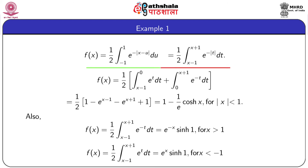Substituting x - u = t, this integral is written as ½·∫_{x-1}^{x+1} e^{-|t|} dt. For |x| < 1, we evaluate this integral by breaking it from x-1 to 0 (where t is negative, so e^{-|t|} = e^t) and from 0 to x+1 (where t is positive, so e^{-|t|} = e^{-t}). This integral evaluates to 1 - (1/e)·cosh(x) for |x| < 1.